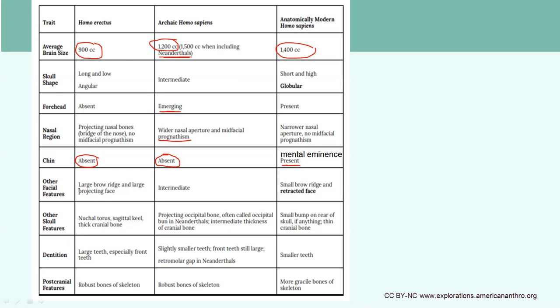Homo erectus still had a very large brow ridge. Archaic Homo sapiens do have a brow ridge bigger than modern humans, but not quite as large as Homo erectus. They also have smaller teeth. The bones of modern humans are quite gracile — thin — while archaic species were still more robust. Neanderthals in particular are very robust because of their environment, having lived during the ice age.